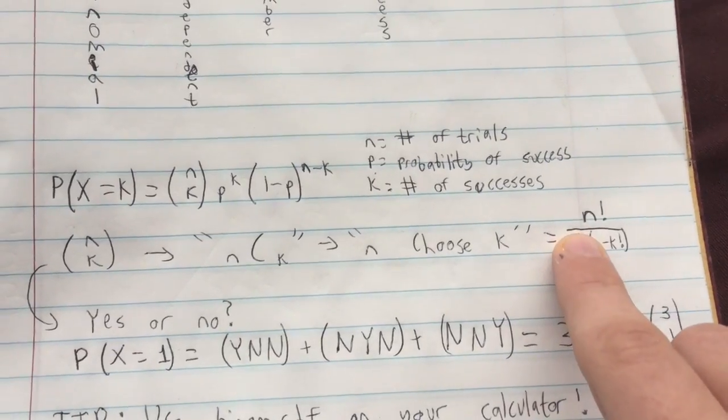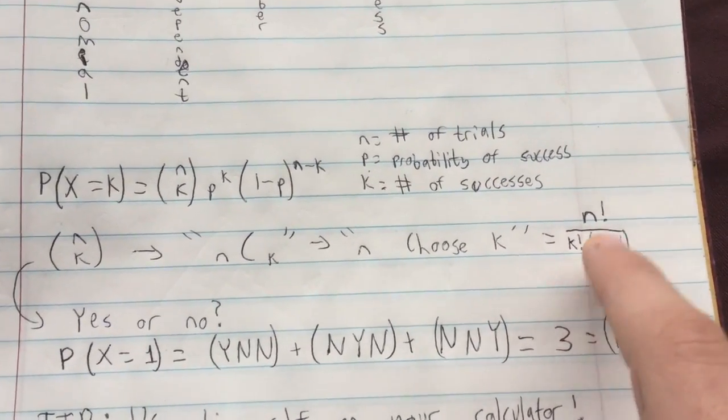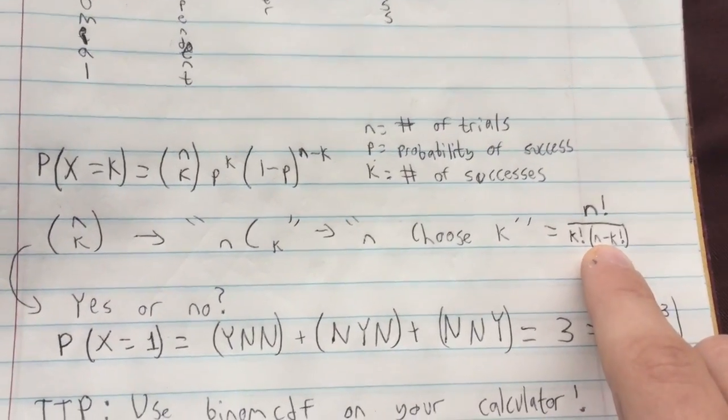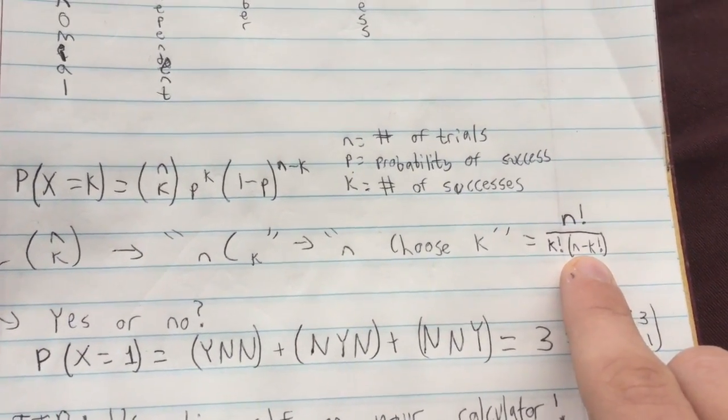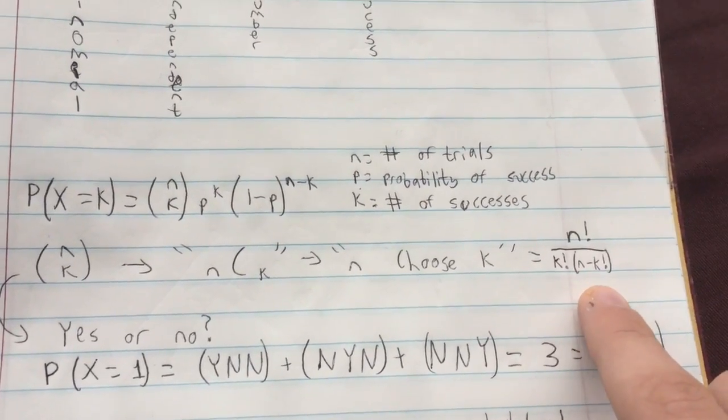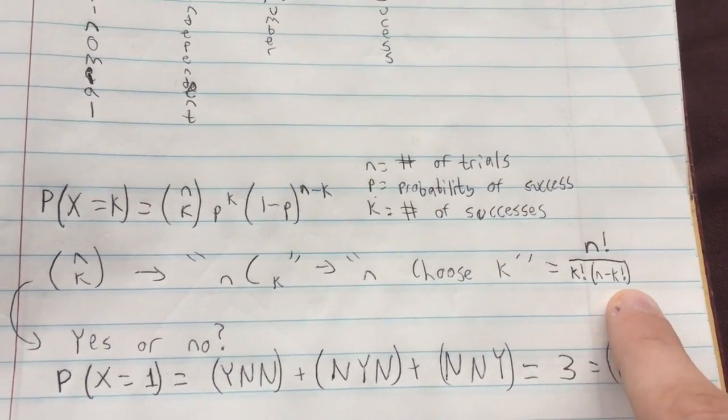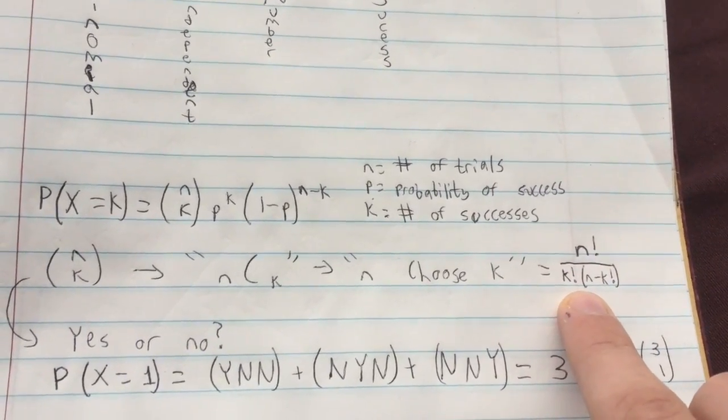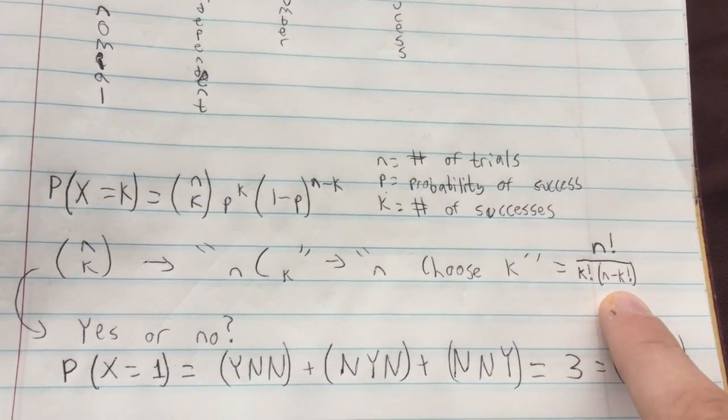Now you can calculate using this formula for more difficult problems. It's N factorial, which remember if N is like 4, it would be 4 times 3 times 2 times 1 divided by K factorial times N minus K factorial. So the number of trials factorial times the number of successes factorial times the number of failures factorial.